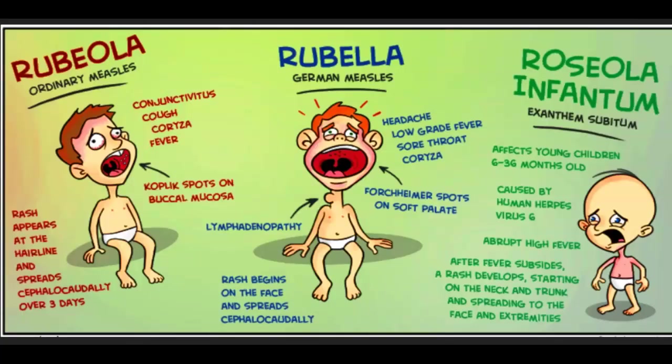The next disease is roseola infantum, also known as exanthem subitum. It's caused by human herpesvirus 6. Most clinical cases occur in children 6 to 18 months of age. The child has a sudden high fever of 103 to 106, malaise, and irritability, but may remain active and alert. An intermittent or constant fever may persist for 3 to 5 days.